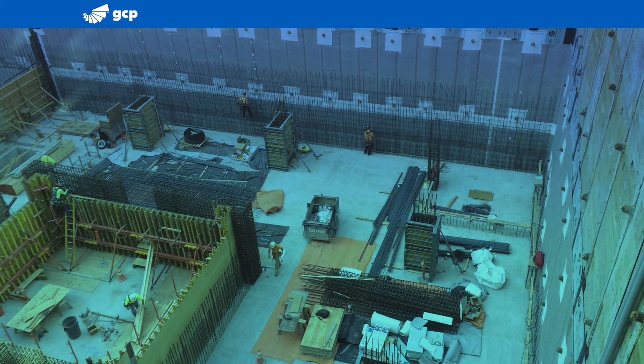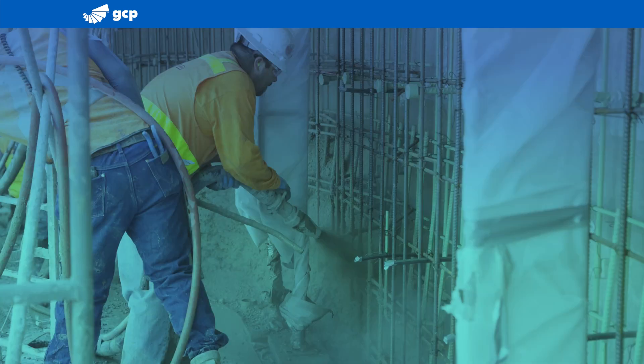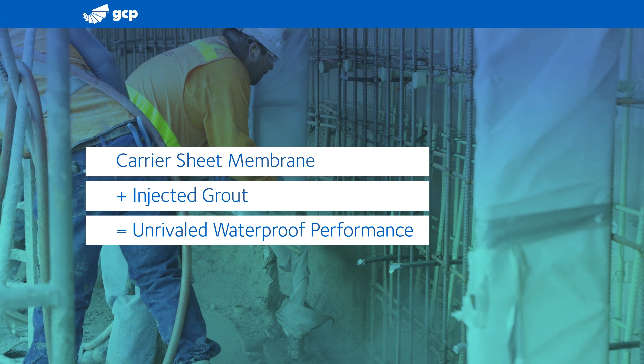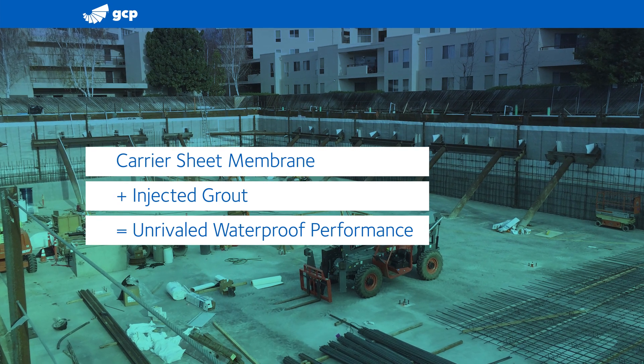GCP's PreProof SCS is the only solution specifically designed to solve the challenges associated with Shotcrete wall waterproofing. An exclusive post-fluid injection system that creates a fully adhered, seamless, and monolithic waterproofing barrier on the outside of the wall.